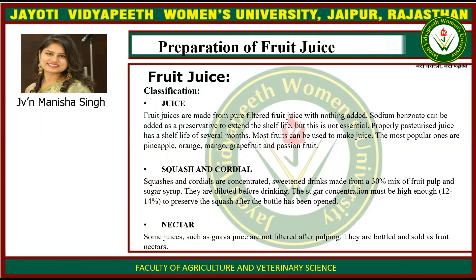Most fruits can be used to make juice. The popular ones are pineapple, orange, mango, grapefruit, and passion fruits. Squash and cordial: squashes and cordials are concentrated sweetened drinks made from 30% of the mix of fruit pulp and sugar syrup. They are diluted before drinking. The sugar concentration must be high enough — 12-14% — to preserve the squash after the bottle has been opened.